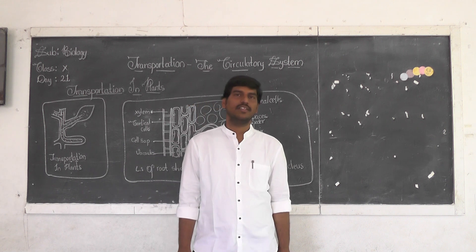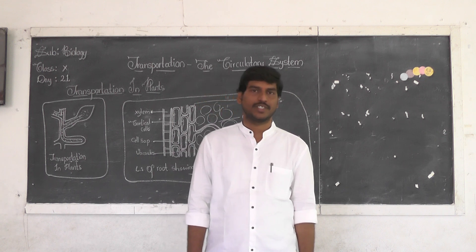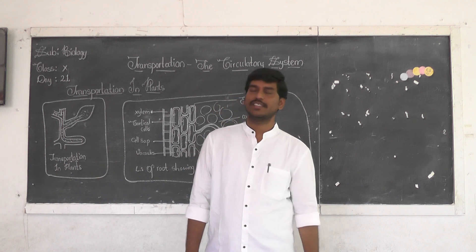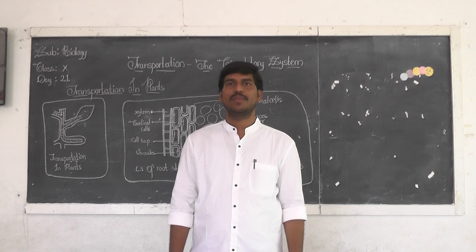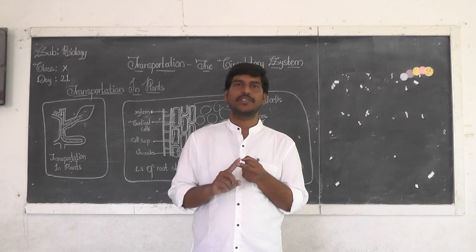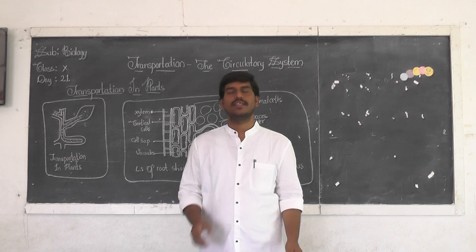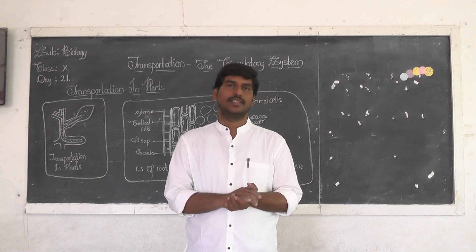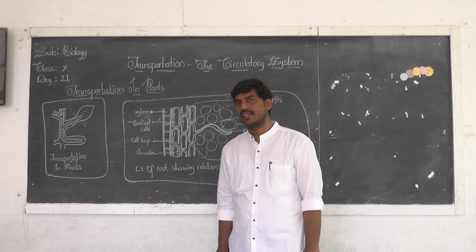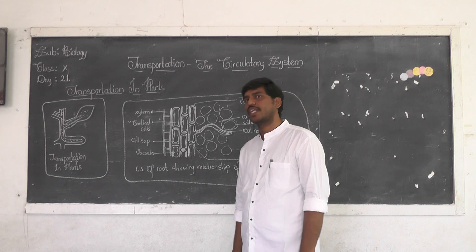In the same way, plants also have a transport system and undergo transportation. What are the materials a plant needs to transport? One is water, second is minerals, and similarly a plant also needs to transport the food materials prepared in the leaves. These materials should be transported from one place to another. The aim and objective of today's class is to learn about transportation in plants.